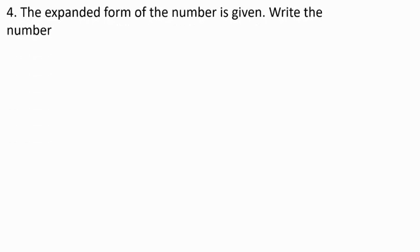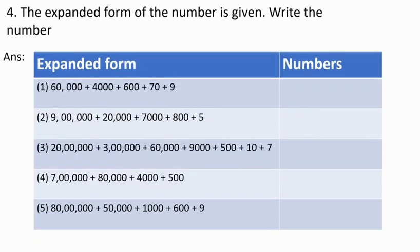Next question: The expanded form of the number is given. Write the number. First: 60,000 plus 4,000 plus 600 plus 70 plus 9. The number is 64,679. Next: 9 lakh plus 20,000 plus 7,000 plus 800 plus 5. The number is 9,27,805. Next: 20 lakh plus 3 lakh plus 60,000 plus 9,000 plus 500 plus 10 plus 7. The number is 23,69,517.